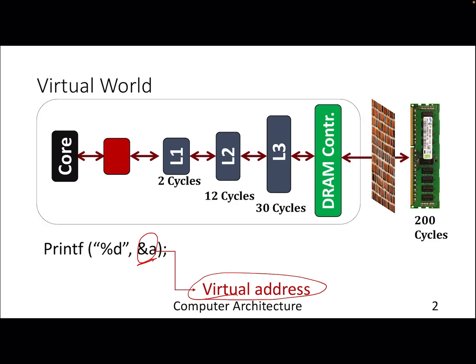So far we discussed about cache hierarchy where the cache gets an address, and that address is the same as the address mapped to DRAM — which is nothing but the physical address. But in the real world, the processor actually sends a virtual address, and there is a black box that converts this virtual address to a physical address.